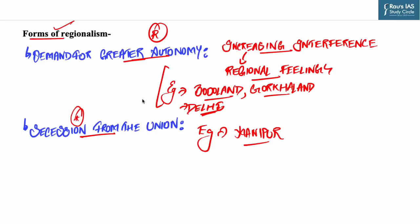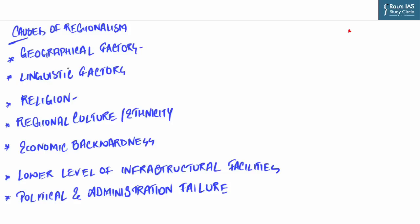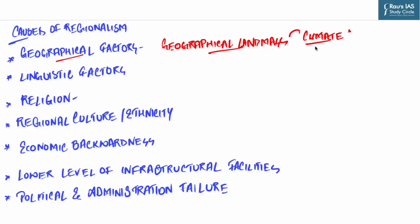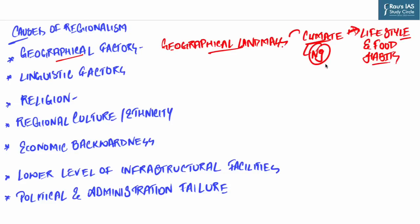Now let us look into the causes of regionalism. First is geographical factors. India has a diverse geographical landmass, so there is a huge variation in climate. These differences cause changes in lifestyle and food habits — for example, north India is very cold during winter and hot during summer, unlike south India which is hot and humid. People living in forests, like tribes, depend on forests for food, shelter, and other needs, and have a significantly different lifestyle. These differences trigger the cause of regionalism.